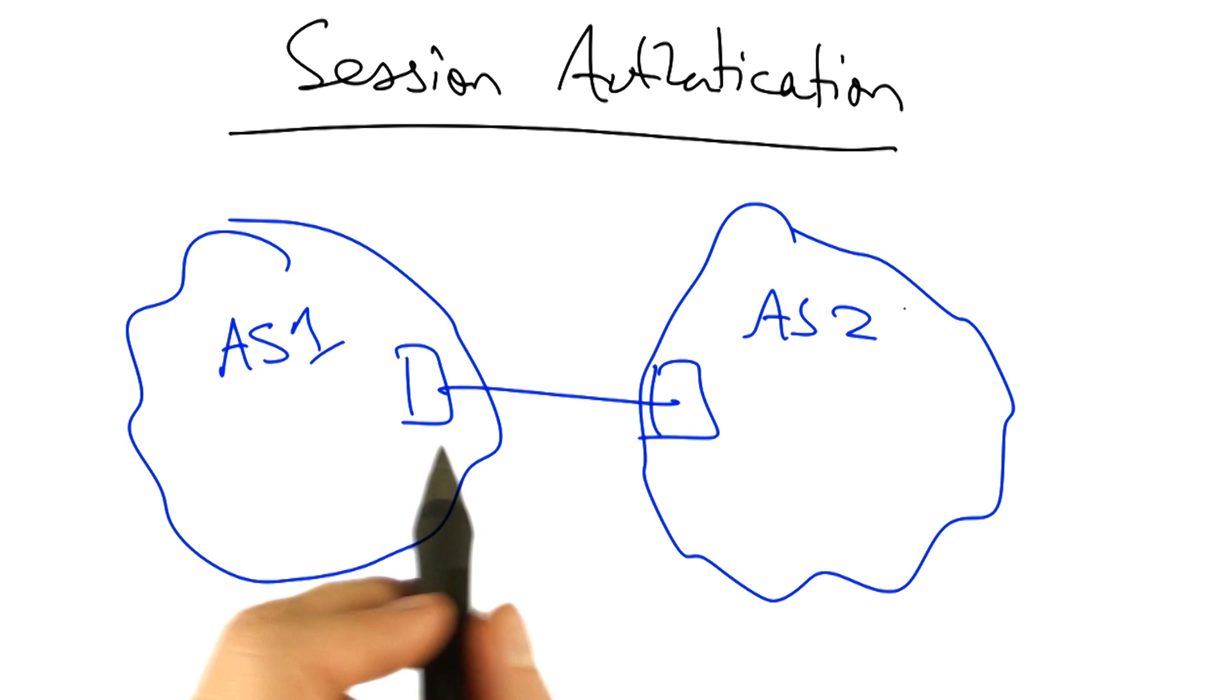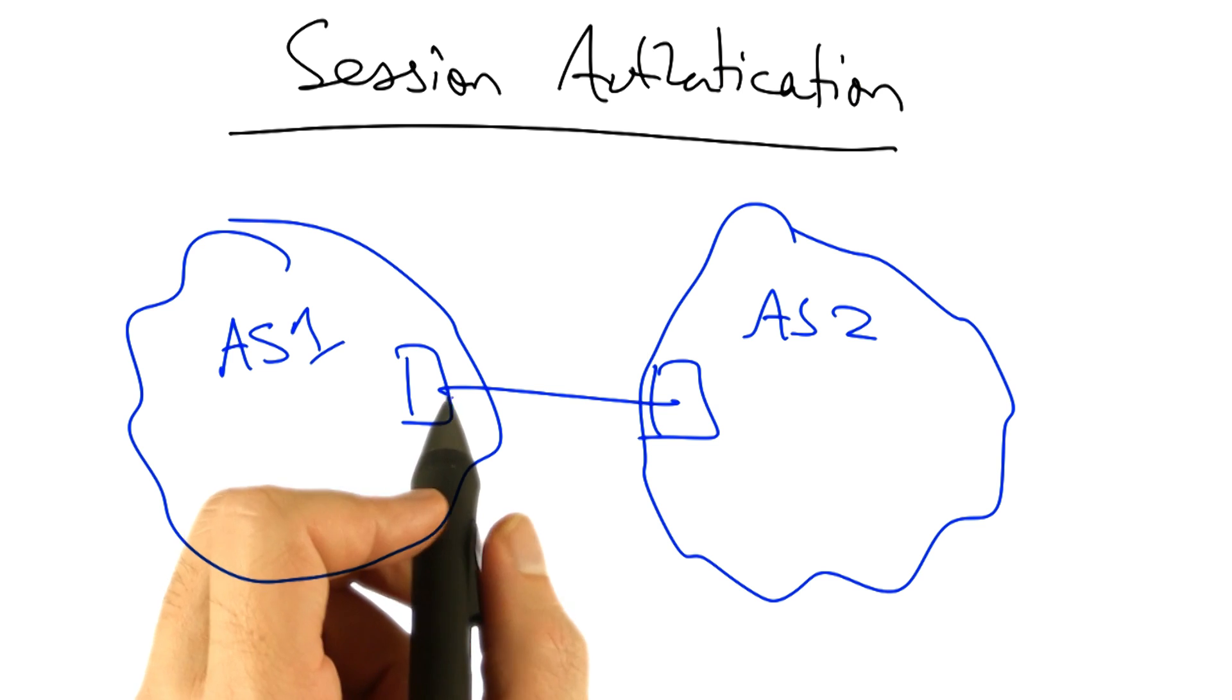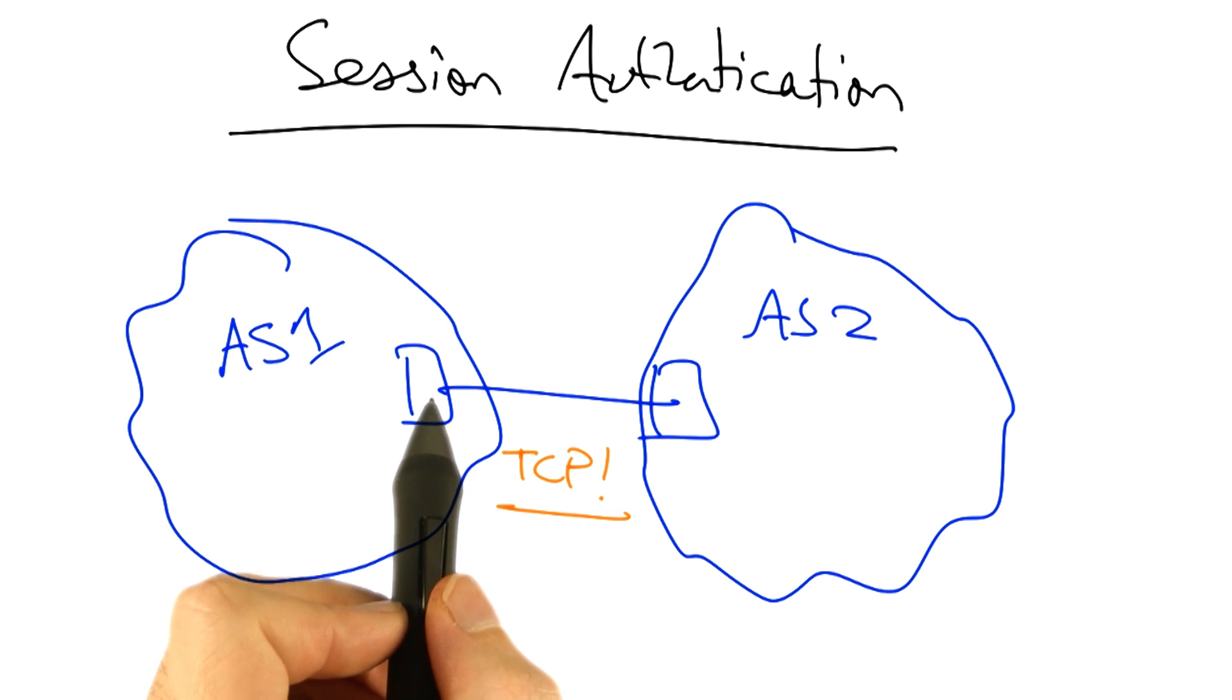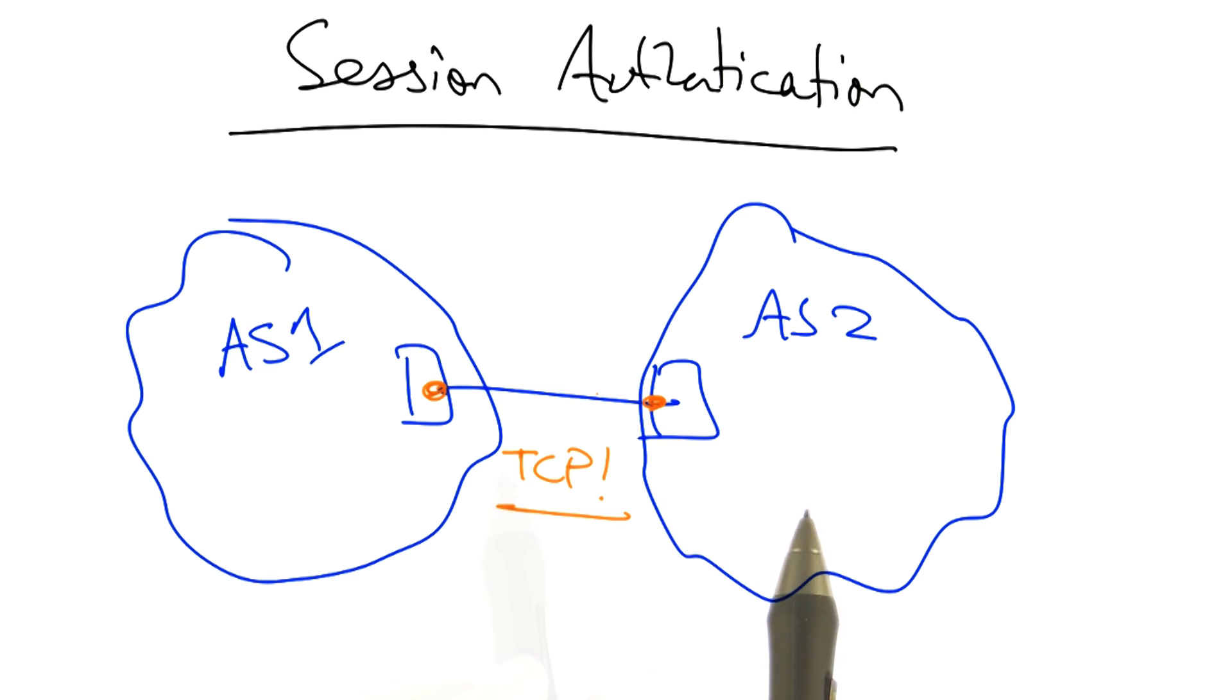Session authentication simply attempts to ensure that BGP routing messages sent between routers between ASs are authentic. This turns out to be a little easier than it might appear because the session between these routers is a TCP session. Therefore, all we have to do is authenticate this session.